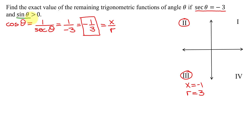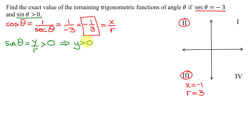Using the last piece of information given, the sine of theta — defined as y over r — was told to be greater than 0, so it's positive. Since r is always positive, that means y has to be positive as well. Y is greater than 0 above the x-axis, so that's in quadrant 1 and quadrant 2. Therefore my angle terminates in quadrant 2, as that's the only quadrant where the secant is negative and the sine is positive.